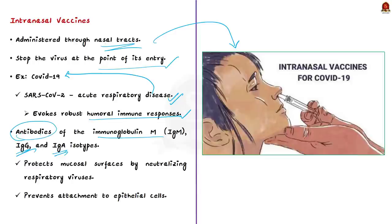Recent reports indicate that SARS-CoV-2 evokes robust humoral immune responses, including production of virus-specific antibodies of the immunoglobulin M (IgM), immunoglobulin G (IgG) and immunoglobulin A (IgA) isotypes. An antibody is a protein produced by the body's immune response when it detects a harmful substance — here the harmful substance is the antigen. When the virus comes into the body, the immune system produces antibodies.